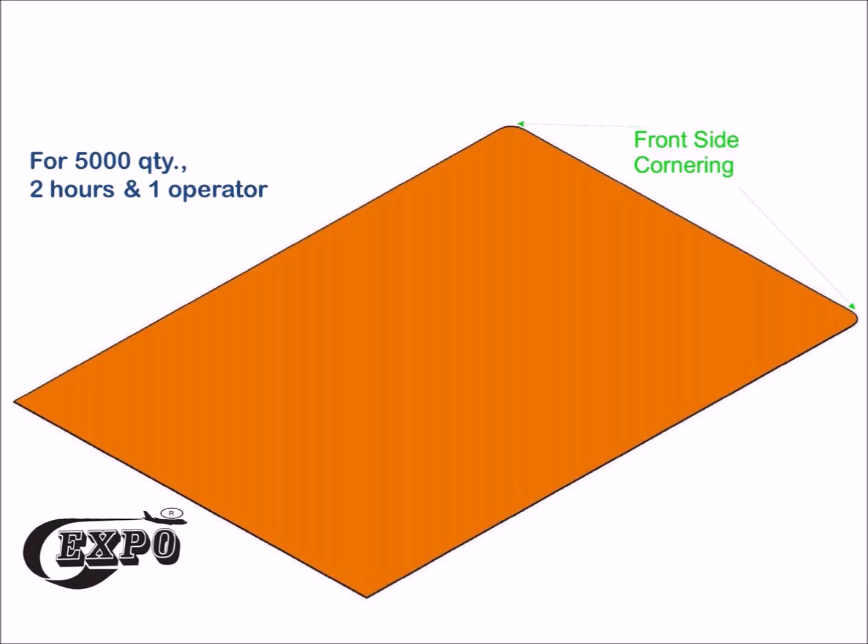Cornering machine is required to perform the front side corner operation for the files which approximately takes two hours and one operator.